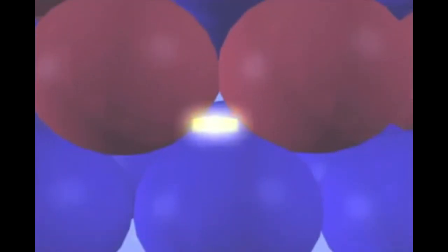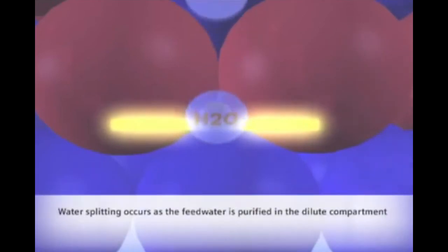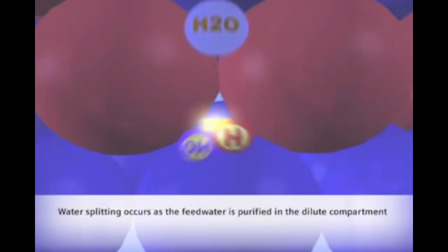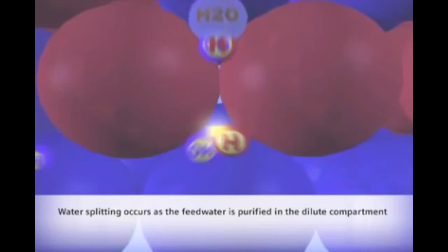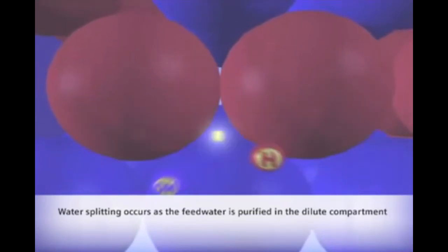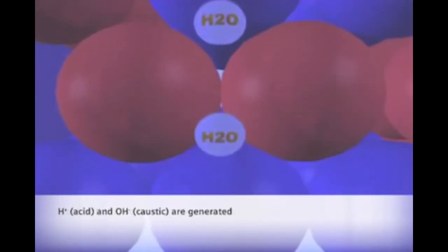At the lower end of the purification compartments, where the ion concentration has been reduced to the parts per trillion level, the electric field becomes concentrated between the resin beads and the surrounding water. When this localized voltage potential exceeds approximately 8 tenths of a volt, an electrochemical reaction occurs, and water molecules are split into hydrogen and hydroxide ions, which are essentially acid and caustic.